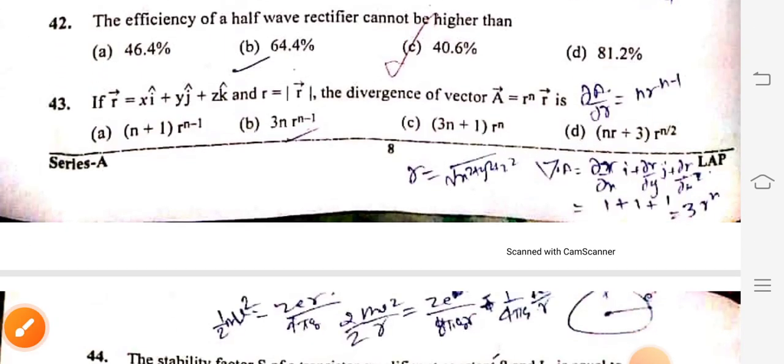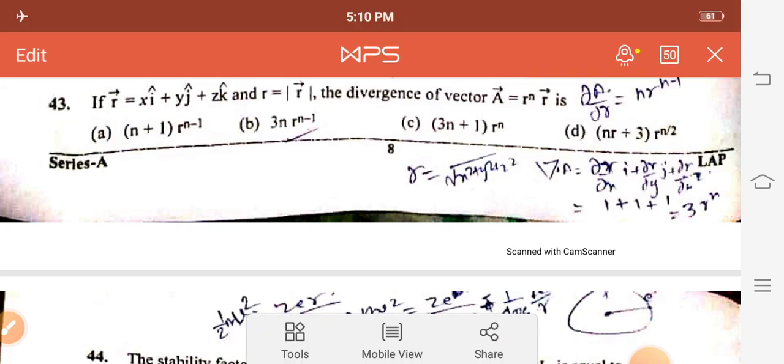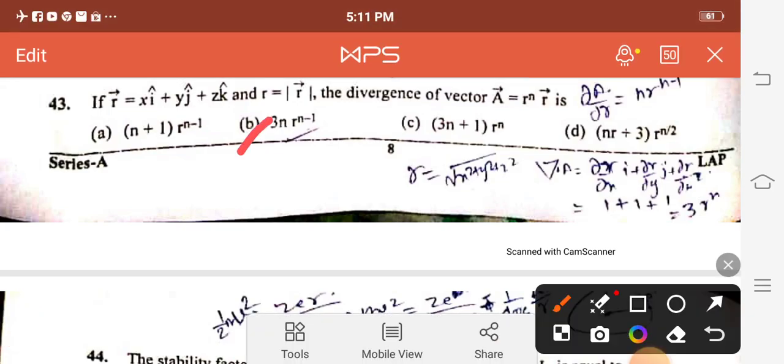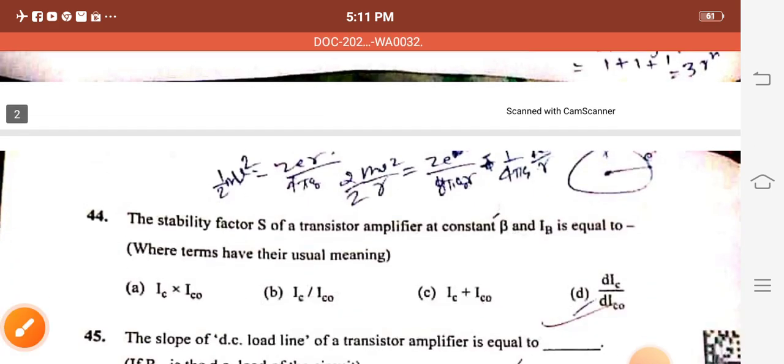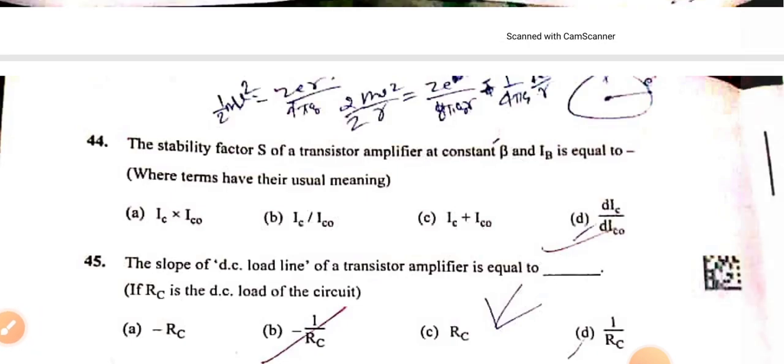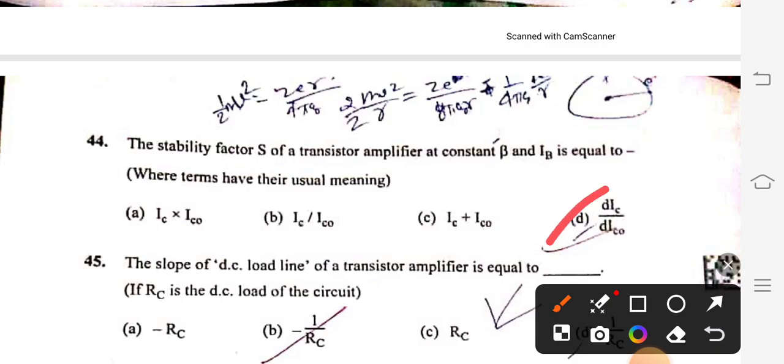Question 43: If R vector equals xi cap plus yj cap plus zk cap and R equals mod of R vector, then the divergence of vector A vector equals R to the power N times R vector is 3N times R to the power N minus 1, option B. Question 44: The stability factor S of a transistor amplifier at constant beta and IB is equal to DIC over DICO, option D.